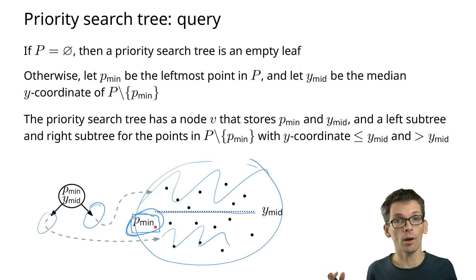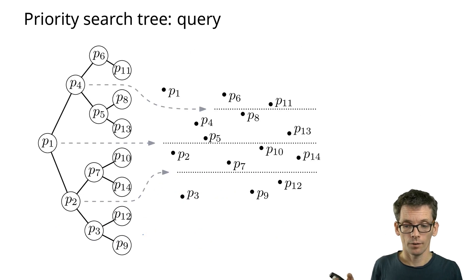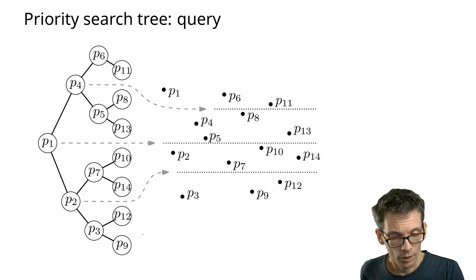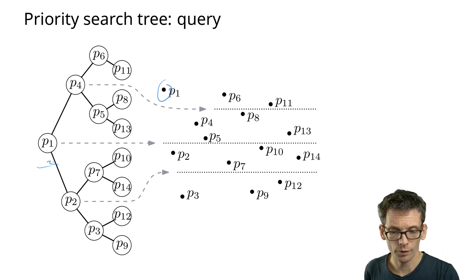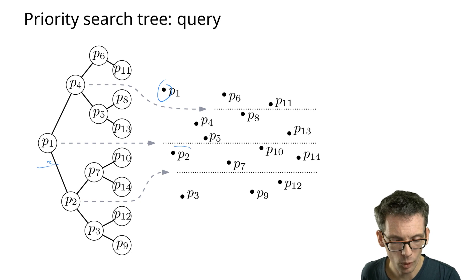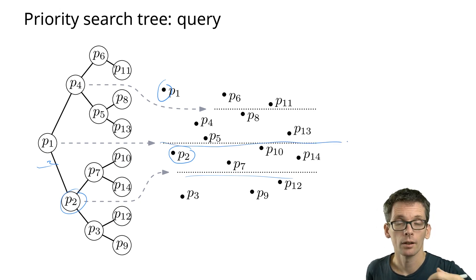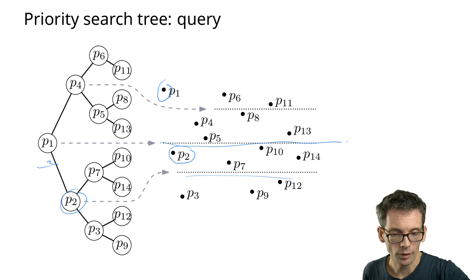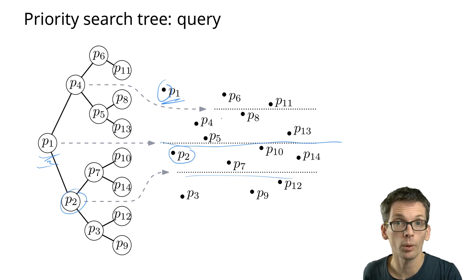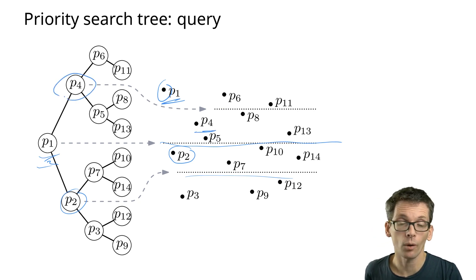In the right subtree I store all points above the median; in the left subtree all points below the median, excluding the minimum-x point already handled. The leftmost point P1 is stored at the root, then recursively I have a tree above and a tree below. For the points above, the leftmost is P4, stored at that node and split again at the median y-coordinate.